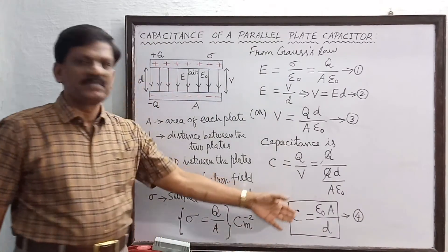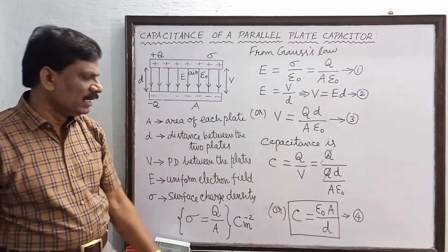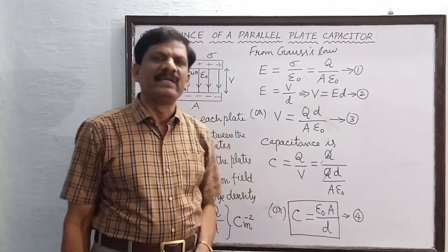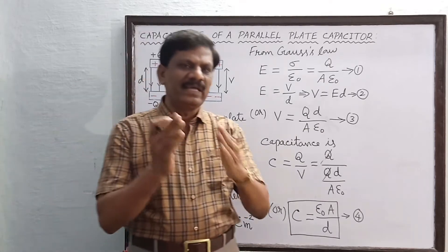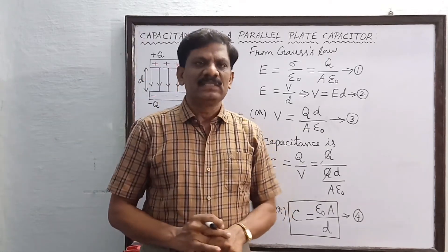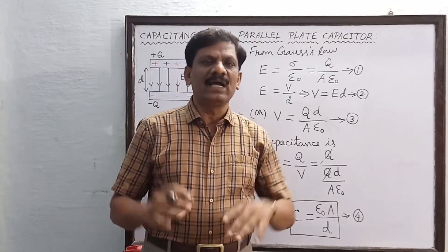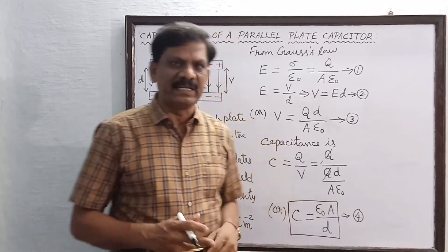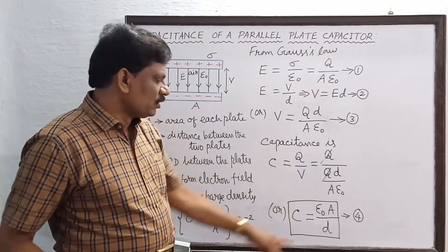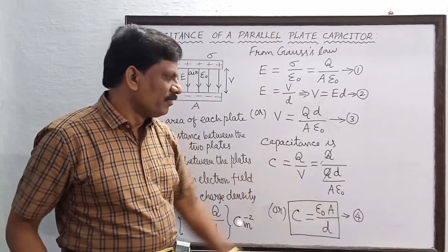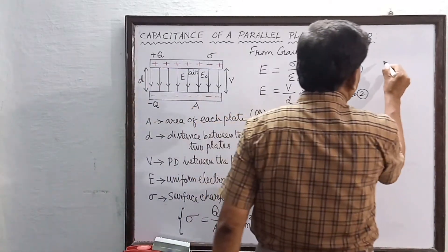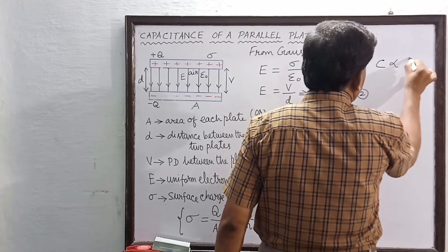This is the expression for the capacitance of a parallel plate capacitor with air or free space between the two plates — that is, in the absence of any dielectric. Equation 4 clearly indicates that capacitance C is directly proportional to A.